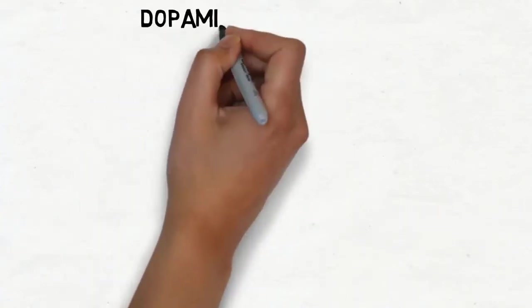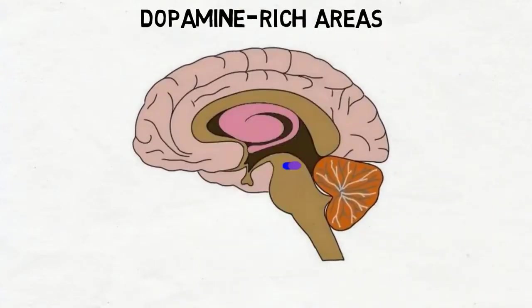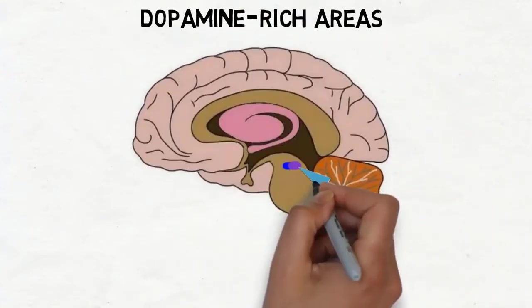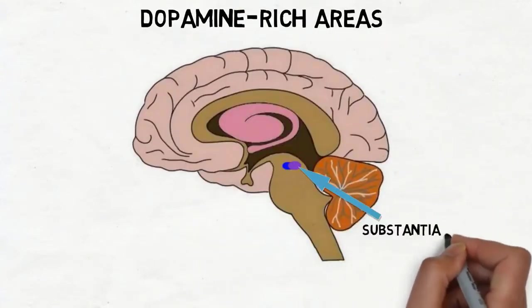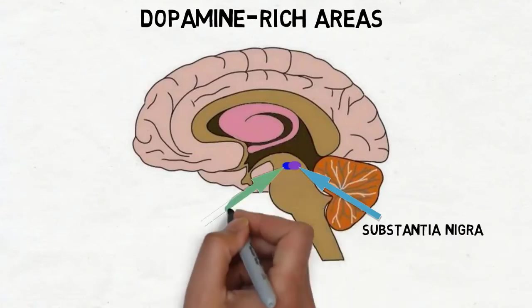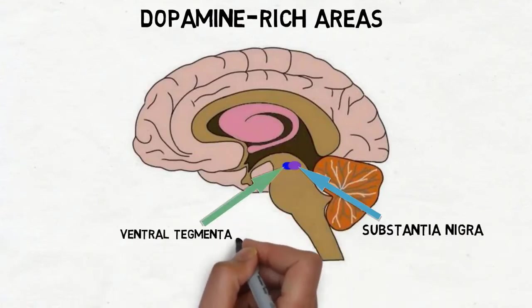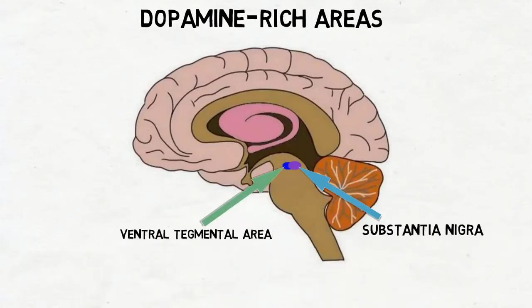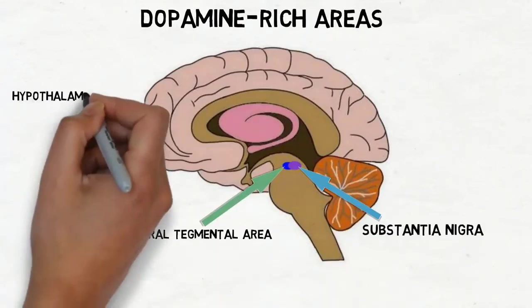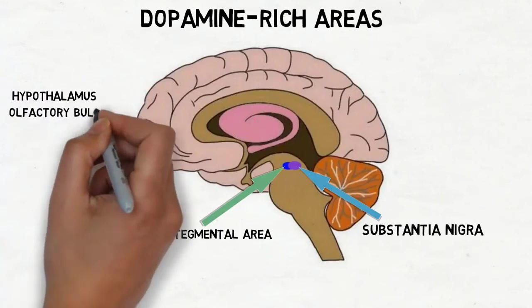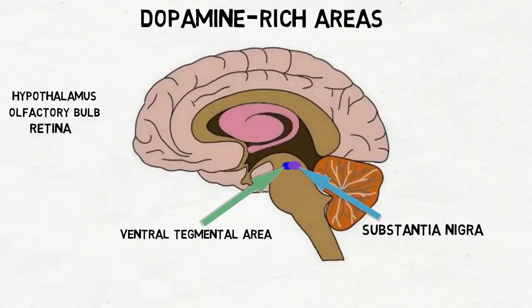There are several areas of the brain where dopamine neurons are concentrated. The largest are the substantia nigra and ventral tegmental area in the midbrain. Other areas include the hypothalamus, olfactory bulb, and retina.